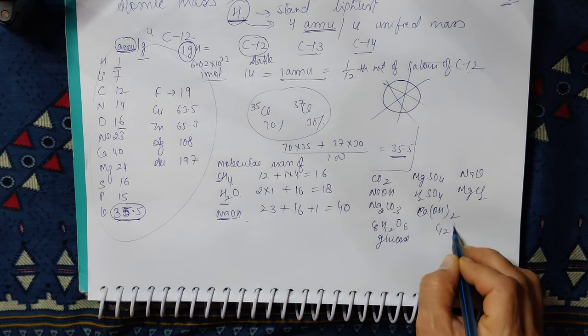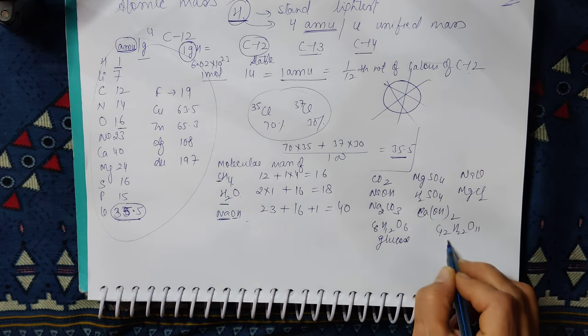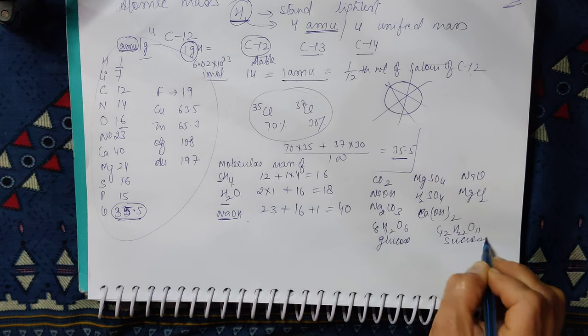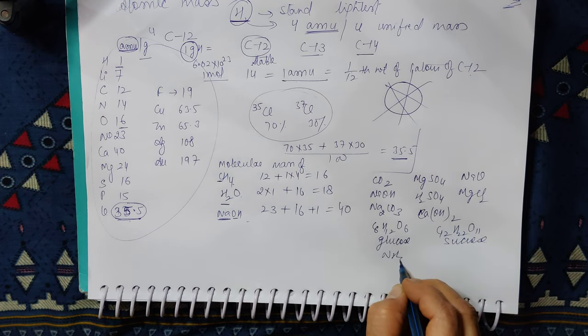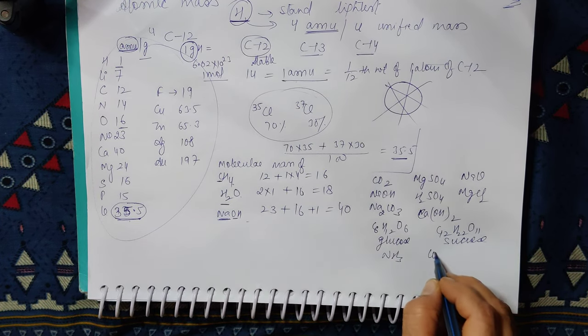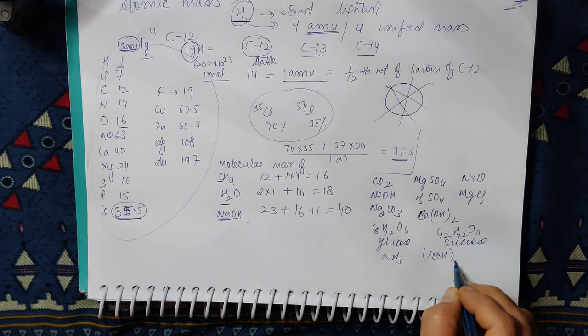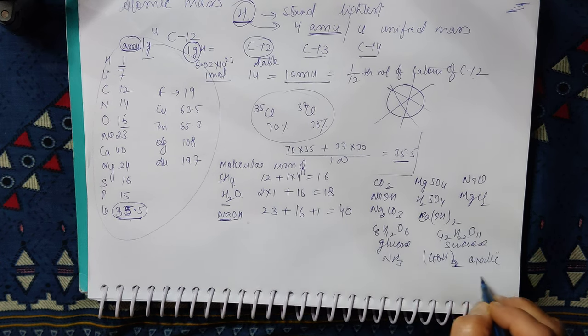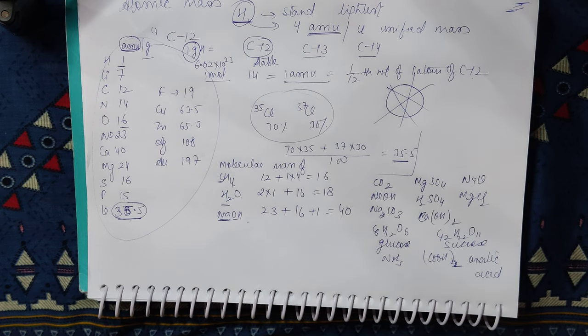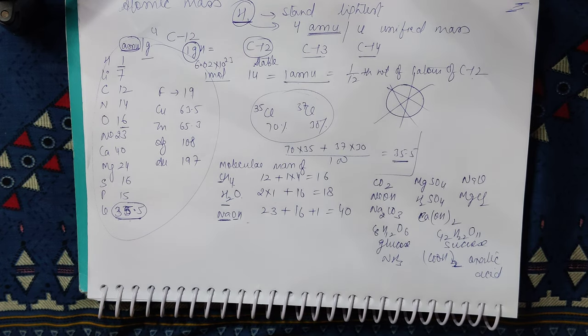Sucrose is C12H22O11. Similarly, you have to calculate Ammonia NH3, COOH whole twice - we call this Oxalic Acid. You have to calculate this also. Take a screenshot of this and calculate their molecular masses.